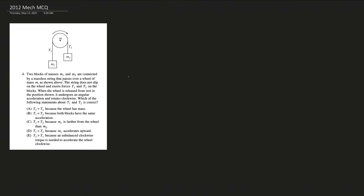Number four: two blocks of masses M1 and M2 are connected by a massless string over a wheel of mass M. The string exerts tensions T1 and T2 on the blocks. When released from rest, the wheel undergoes angular acceleration and rotates clockwise. Because the pulley has mass, the tensions on each side are not necessarily equal — unlike a massless pulley where tensions would be equal on both sides.